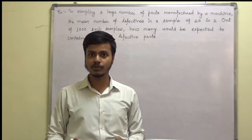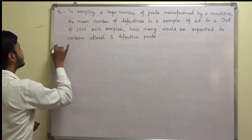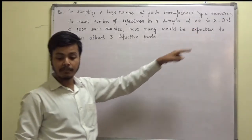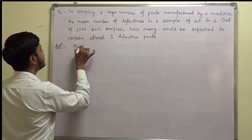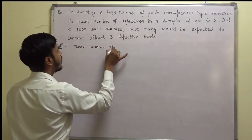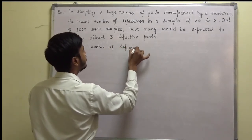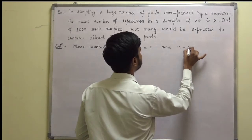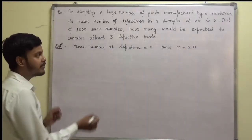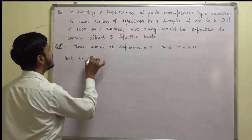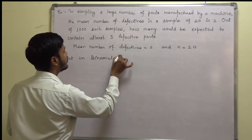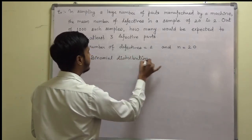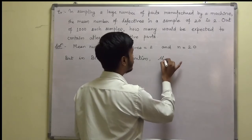At least 3 means more than 3 is also accepted. By looking at this problem, the mean number of defectives is 2. But in binomial distribution we have seen and actually proved that the first property: mean mu is equal to np.